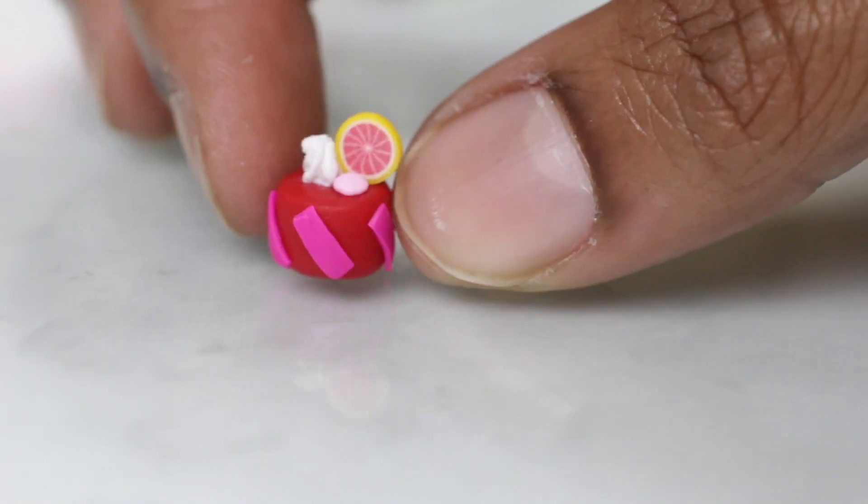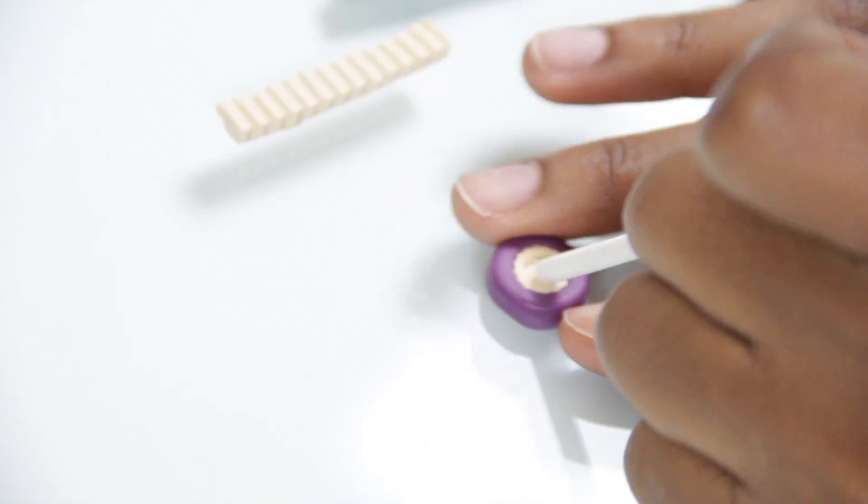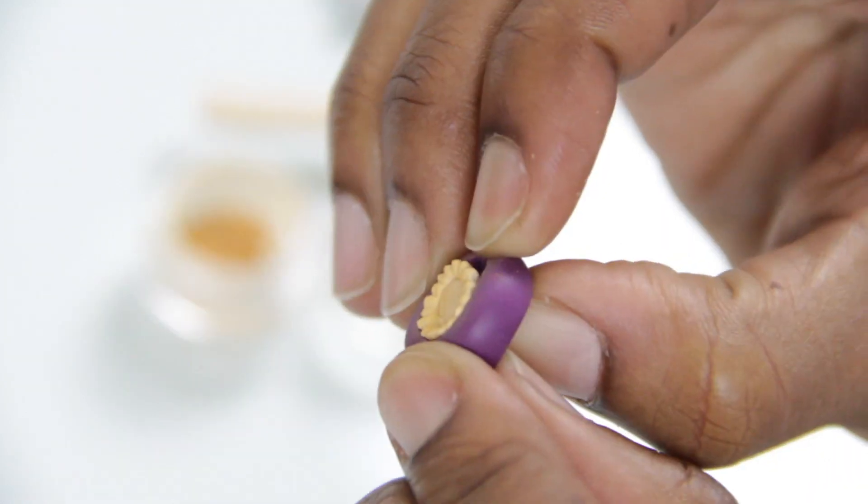The box also comes with 12 different polymer clay canes. So a lot of them are fruit. Almost all of them are fruit and one says happy birthday, that's probably my favorite.